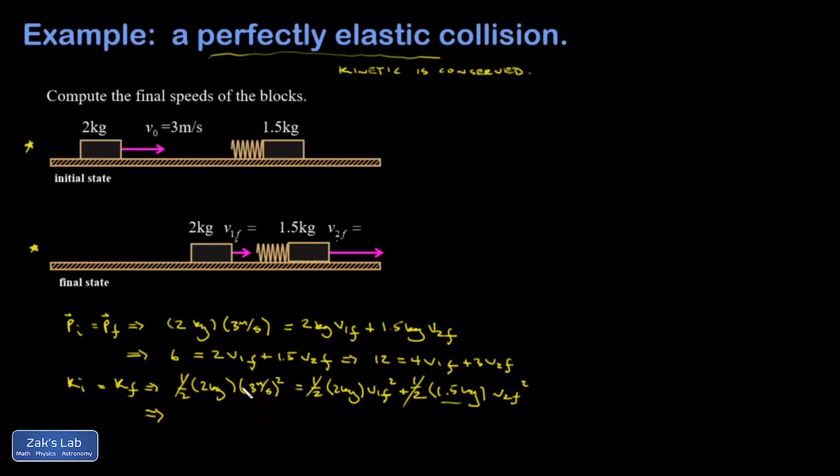So I have three squared which is nine times two, that's 18, multiply it by two and I get 36. On the right hand side, again I multiplied by two even after I cancel those one halves, so I get four v1 final squared and then a three v2 final squared.